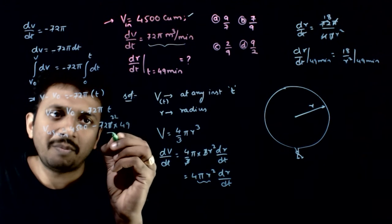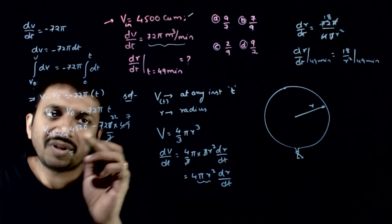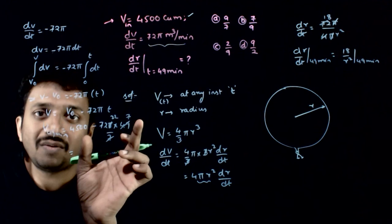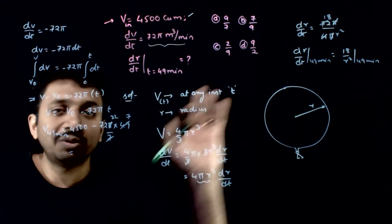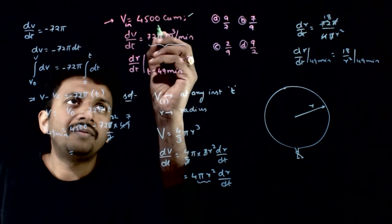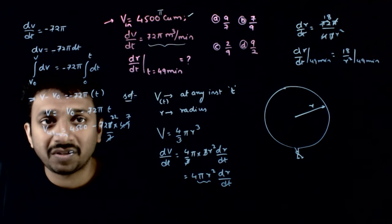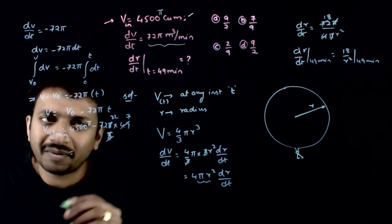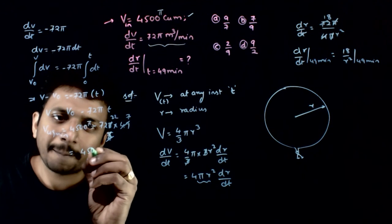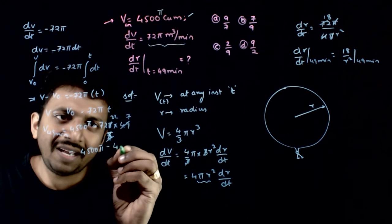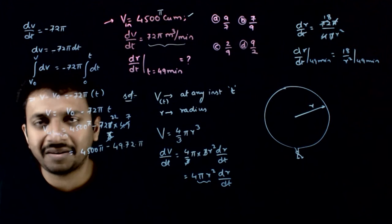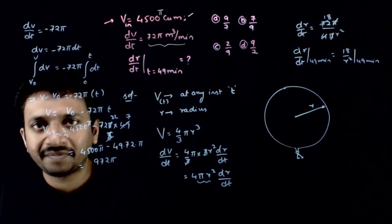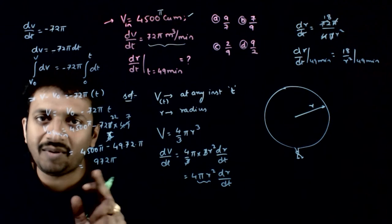Note: π is 22/7. Actually, in the question, the initial volume is given as 4500π, not 4500. So here it will be 4500π minus 72π times t. I will leave it as π here. So at 49 minutes: V = 4500π minus 49 times 72 times π. This turns out to be 972π. So volume at 49 minutes is equal to 972π.